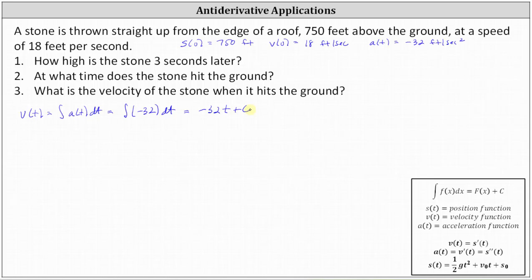So now we know the velocity function equals negative 32t plus C. Because we know the initial velocity v of zero is equal to 18, when the time is zero the velocity must equal 18, which indicates the constant C is equal to 18. So now we know that the velocity function equals negative 32t plus 18.